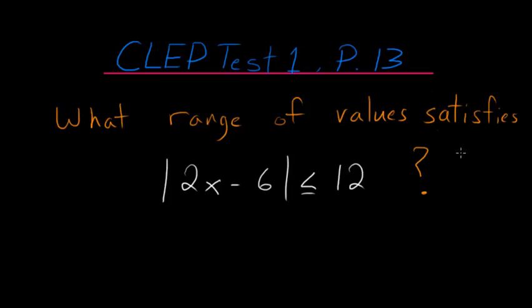What range of values satisfies the inequality the absolute value of 2x minus 6 is less than or equal to 12?